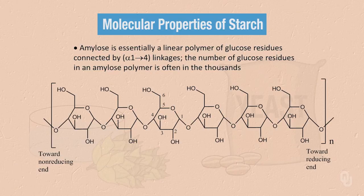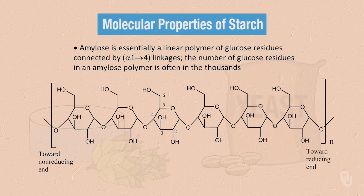Previously, you were introduced to amylose. It is essentially a linear polymer of glucose residues connected by alpha-1,4 linkages, and the number of glucose residues in an amylose polymer is often in the thousands. Amylose has a reducing end where the number one carbon can still open to the aldehyde and be oxidized to the carboxylate, and a non-reducing end where the anomeric carbon is tied up in a glycosidic bond and cannot be oxidized.